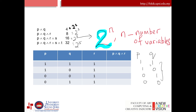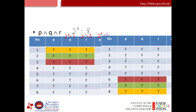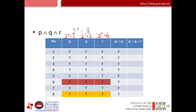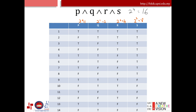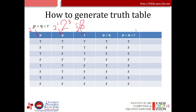Here we have truth tables for P, Q, R, and also P, Q, R, S. For P, Q, R, S (four variables), we have 16 rows. The pattern is: 2⁰ = 1, 2¹ = 2, 2² = 4, 2³ = 8. To generate the truth table, you count the number of variables and calculate 2 to the power of N.